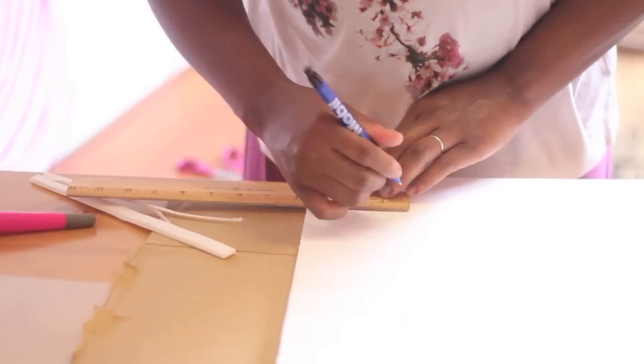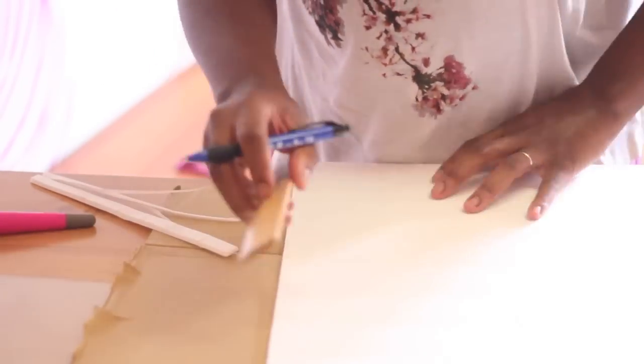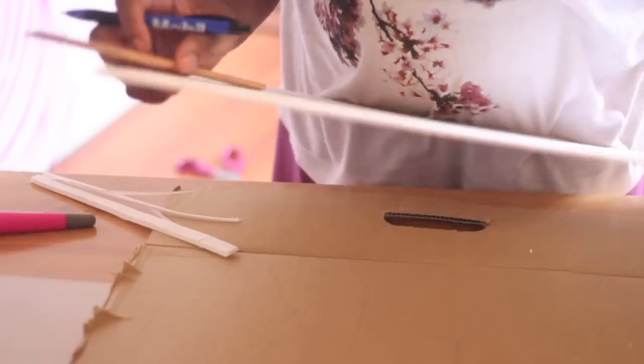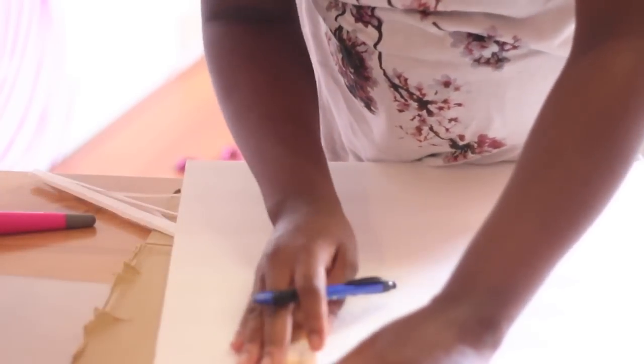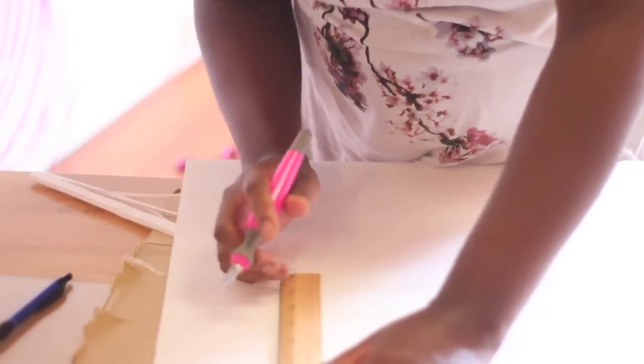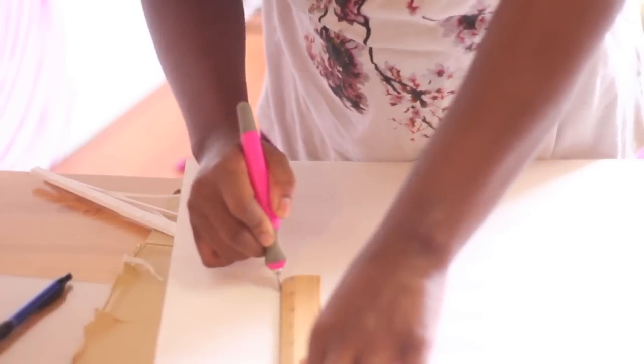So now that I have the length of my top and bottom pieces, I might as well go ahead and get those cut out. Just like the side pieces, I want the depth to be 3 inches. So my measurement ended up being somewhere around 3 inches by 7 inches and 3 quarters.